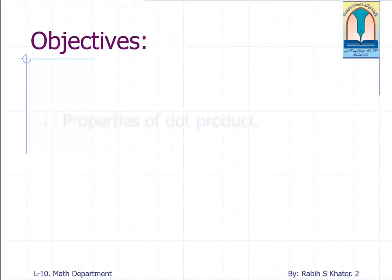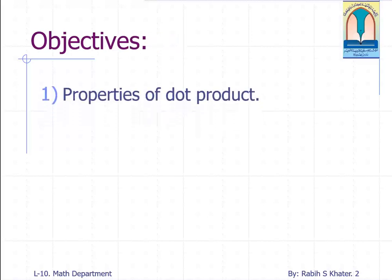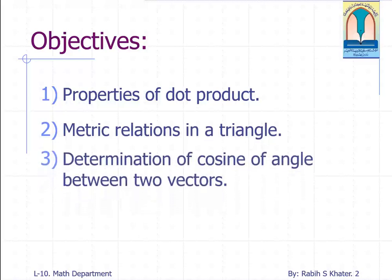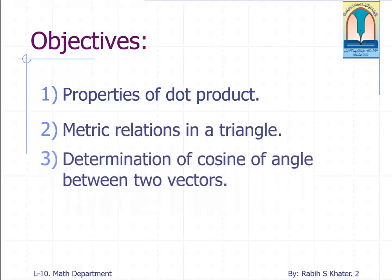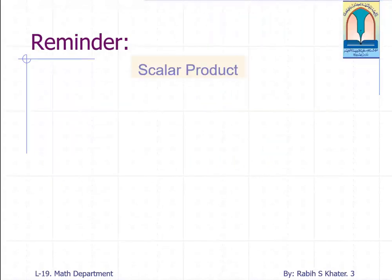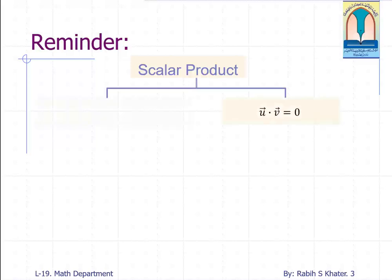In this tutorial we will discuss properties of dot product, metric relations in a triangle, and determination of cosine of angle between two vectors. As a reminder of what we did in video 1 about scalar product, you can check the following chart.